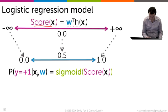So what does that mean more explicitly? This probability is equal to 1 over 1 plus e to the minus score of xi.